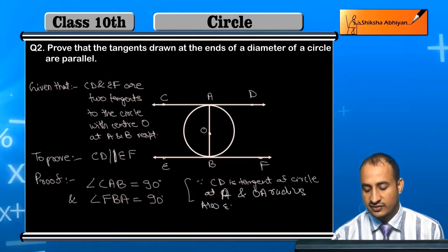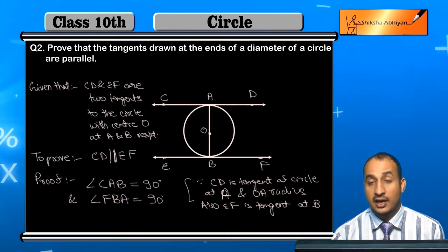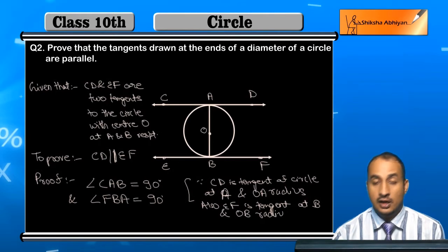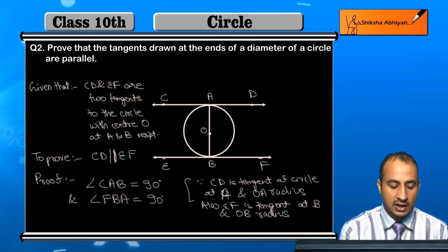EF is tangent at B, and OB is radius. And we know that tangent makes a 90 degree angle with radius at the point of contact.